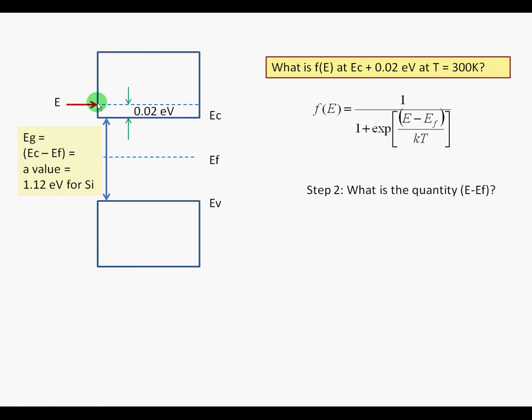The next step is to evaluate the quantity E minus E sub F. That quantity is represented by this energy difference. If you look at this difference carefully, you can see that it has two components: 0.02 eV plus Ec minus E F.